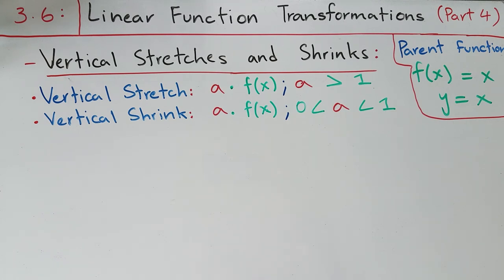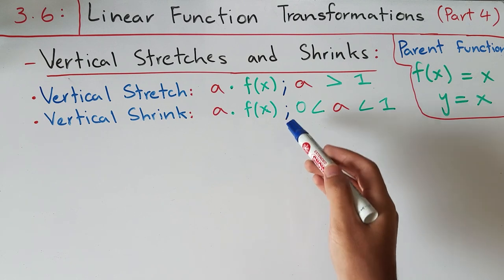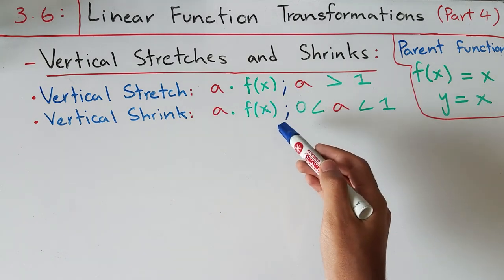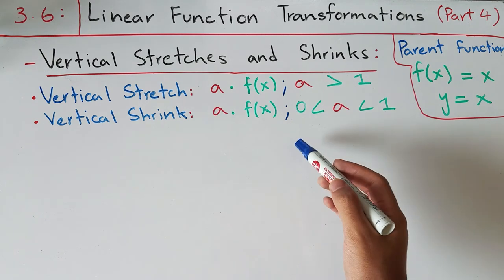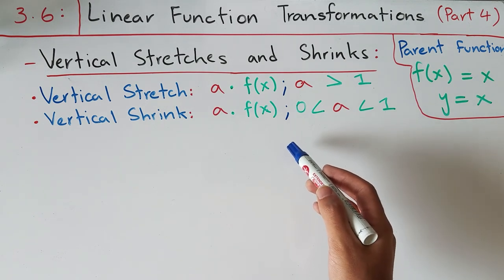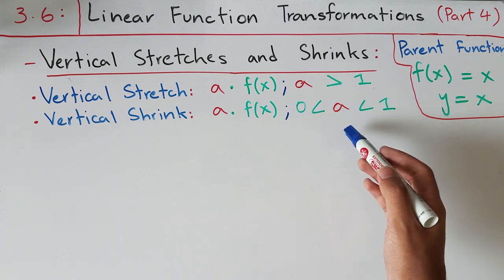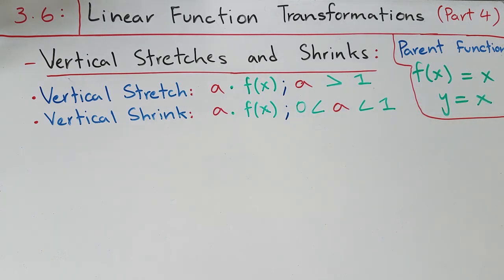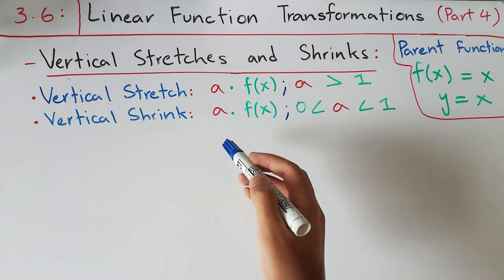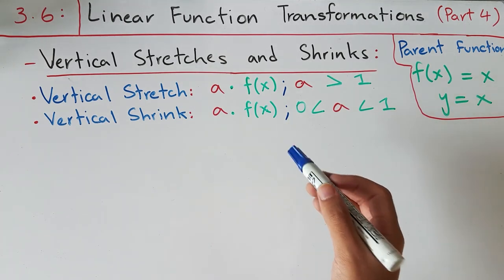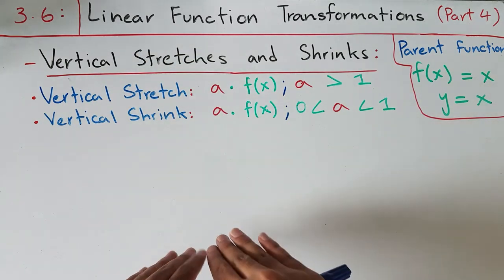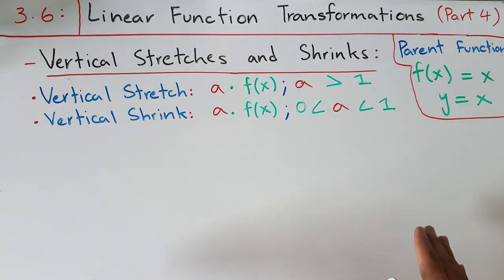For vertical shrinks, the general function is still a times f(x), so you're not changing the x part, but you're multiplying a to the whole function, changing the y part. Your a is constrained to being greater than zero and less than one, meaning a is a fraction. Since a is a fraction, when you multiply it with f(x), the function shrinks vertically and becomes more horizontal compared to the parent function y = x.